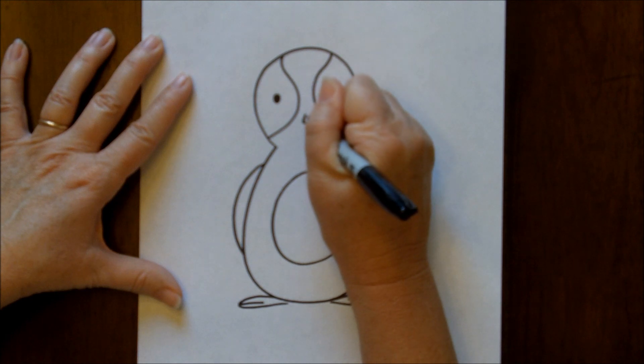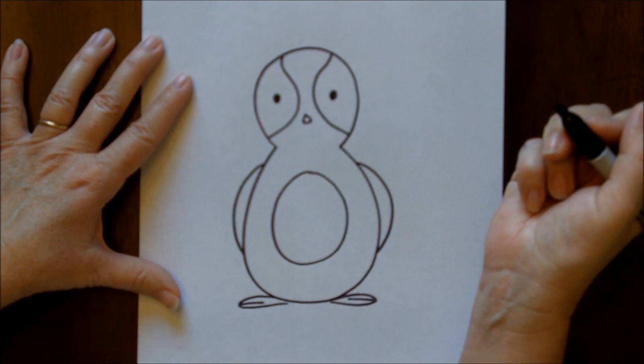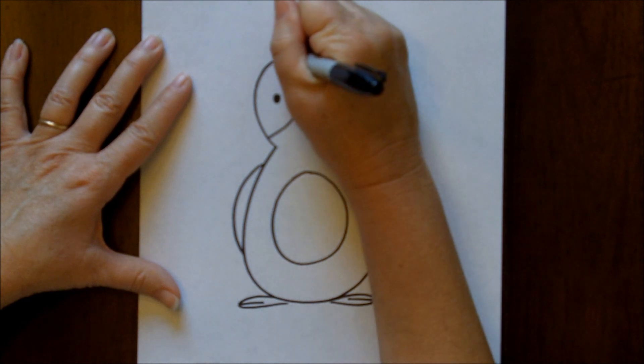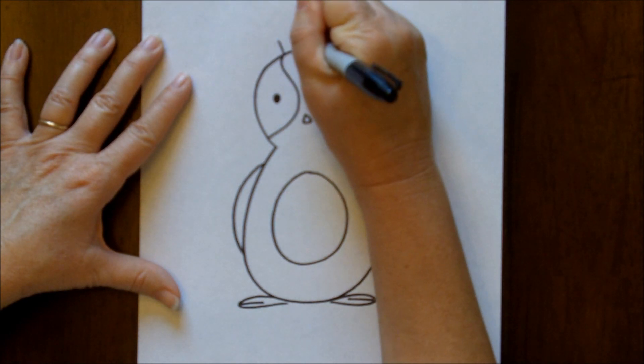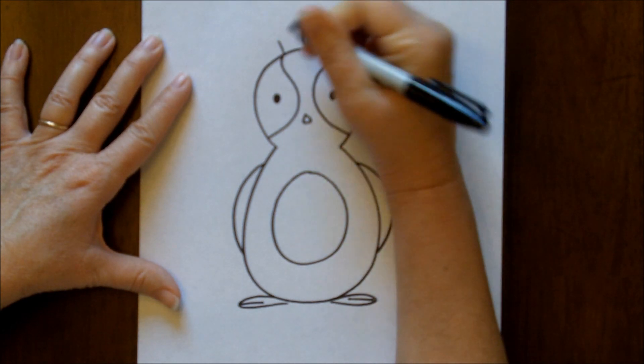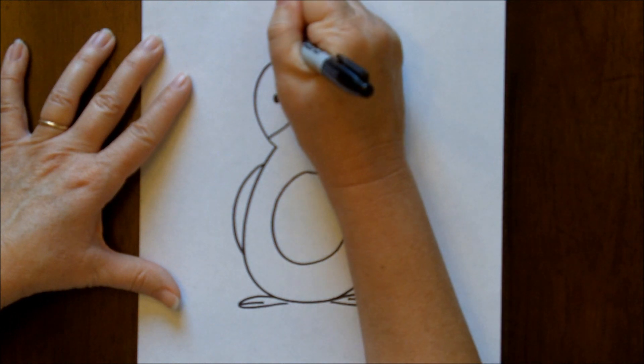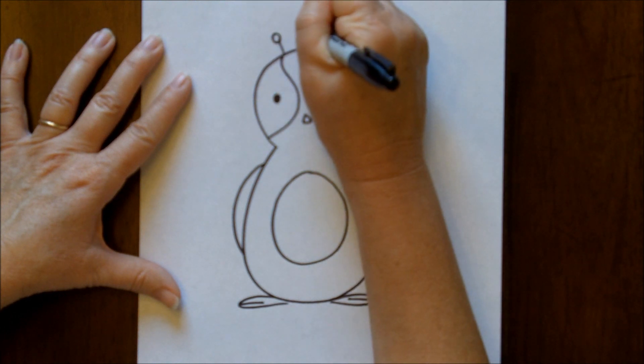A little triangle mouth. And then I like to put some, a little bit of decoration at the top. I like to put three straight lines coming out and some circles at the top.